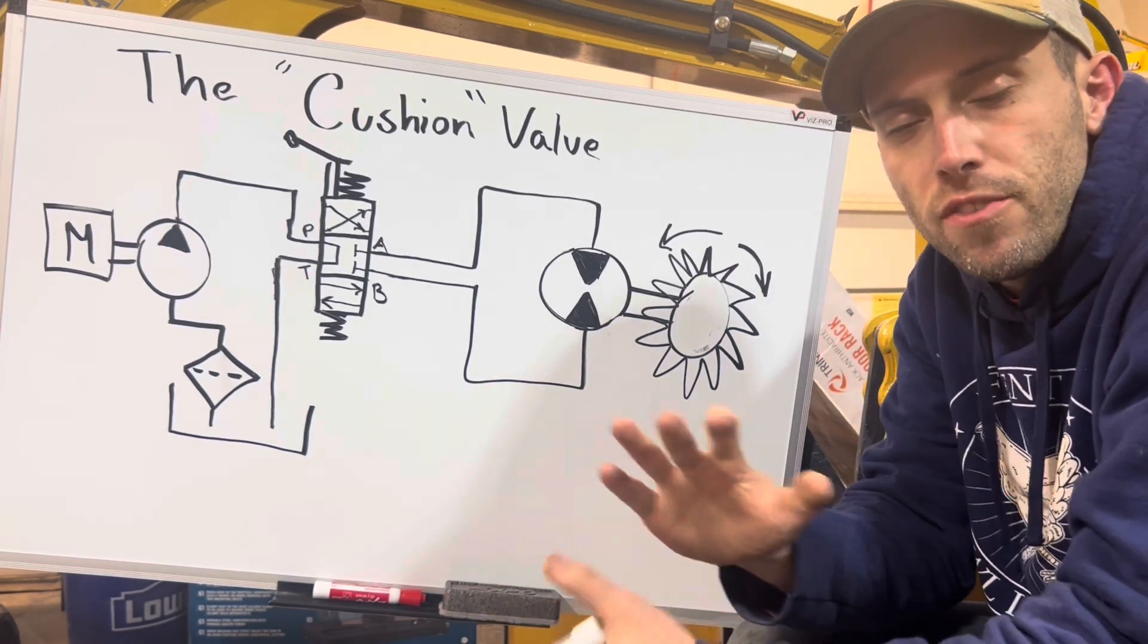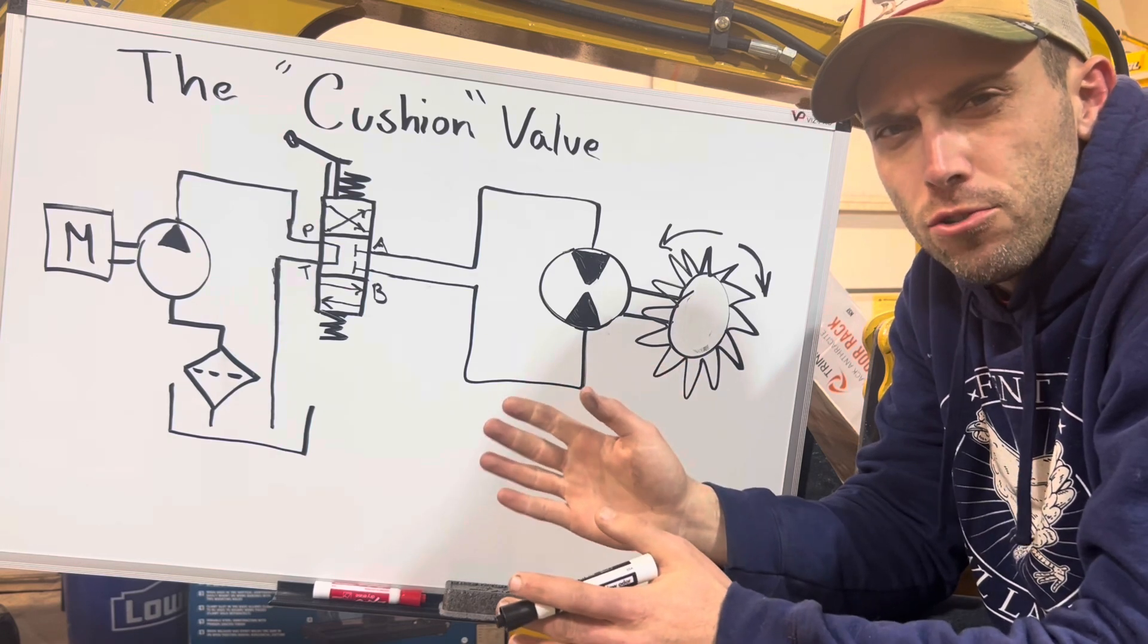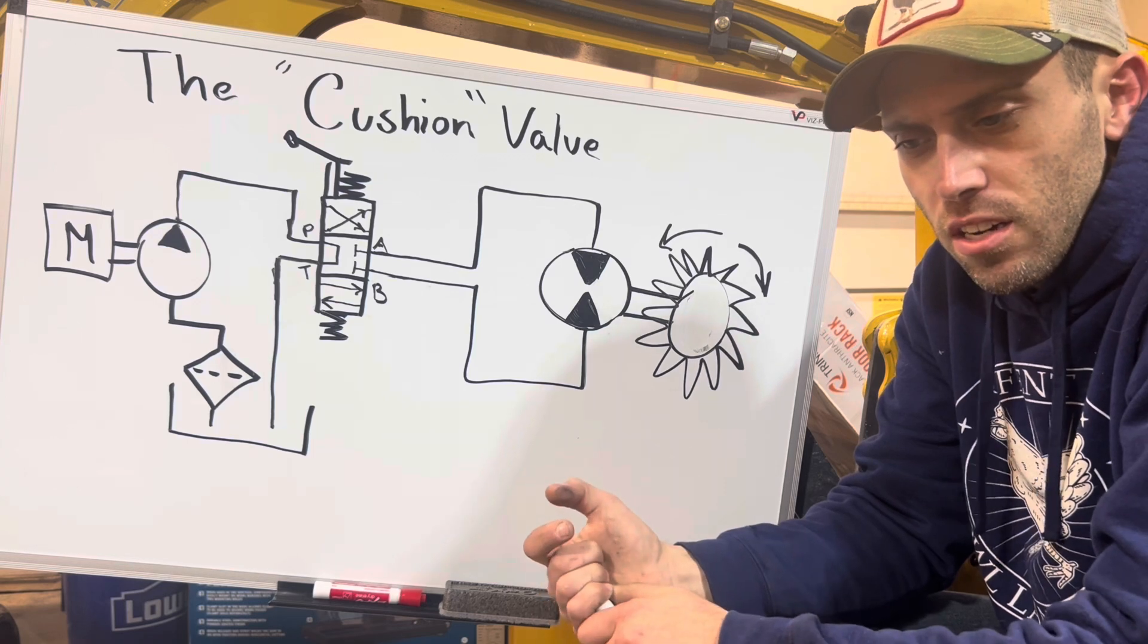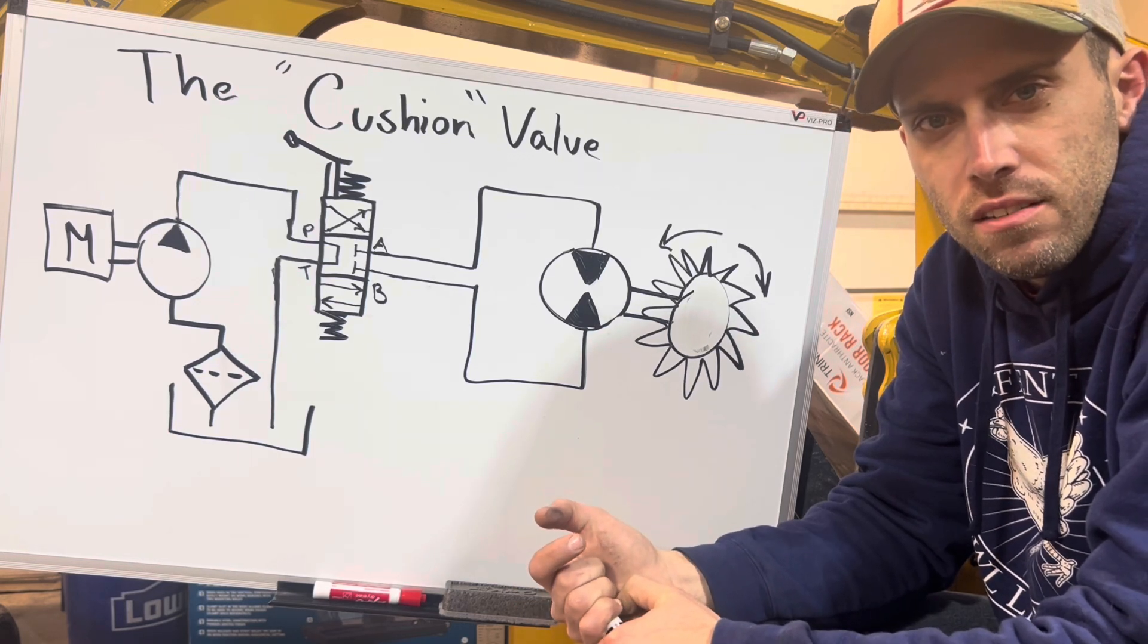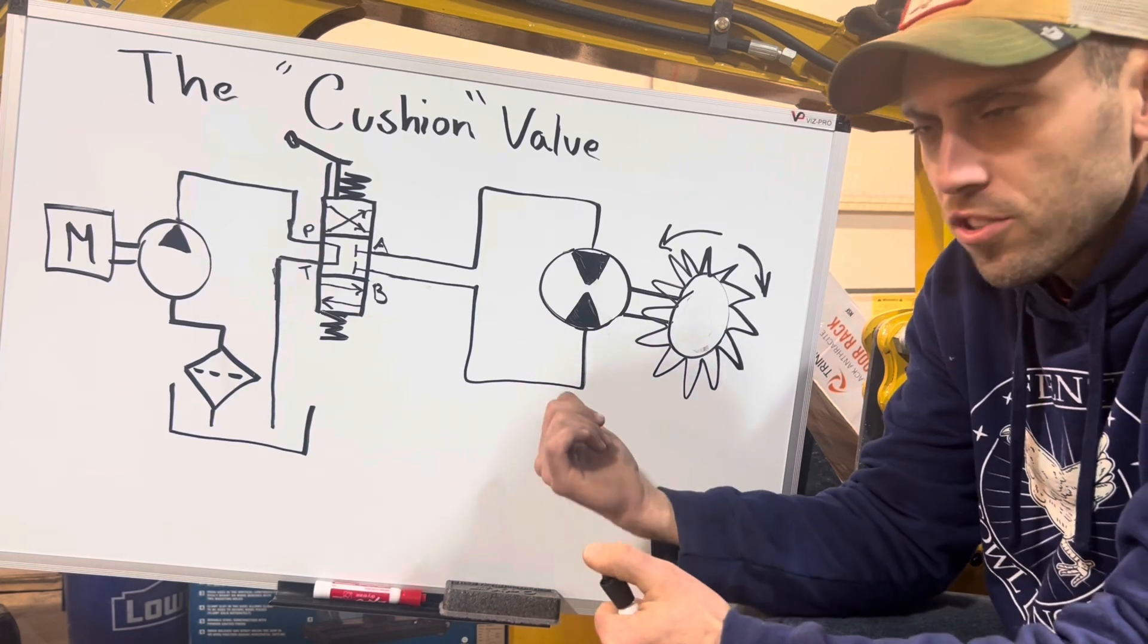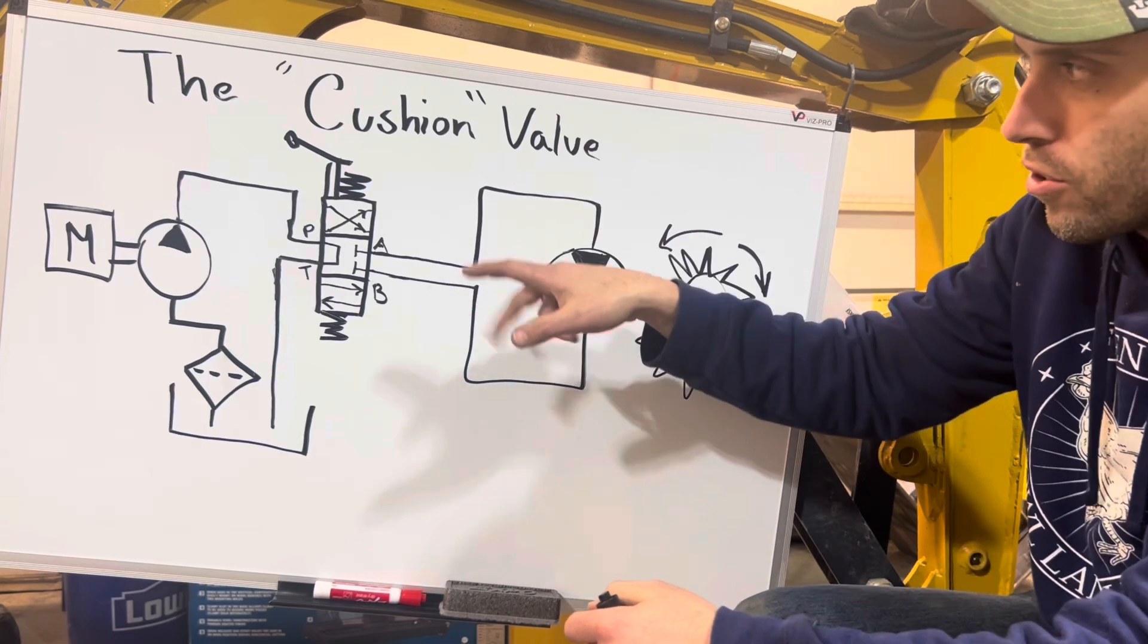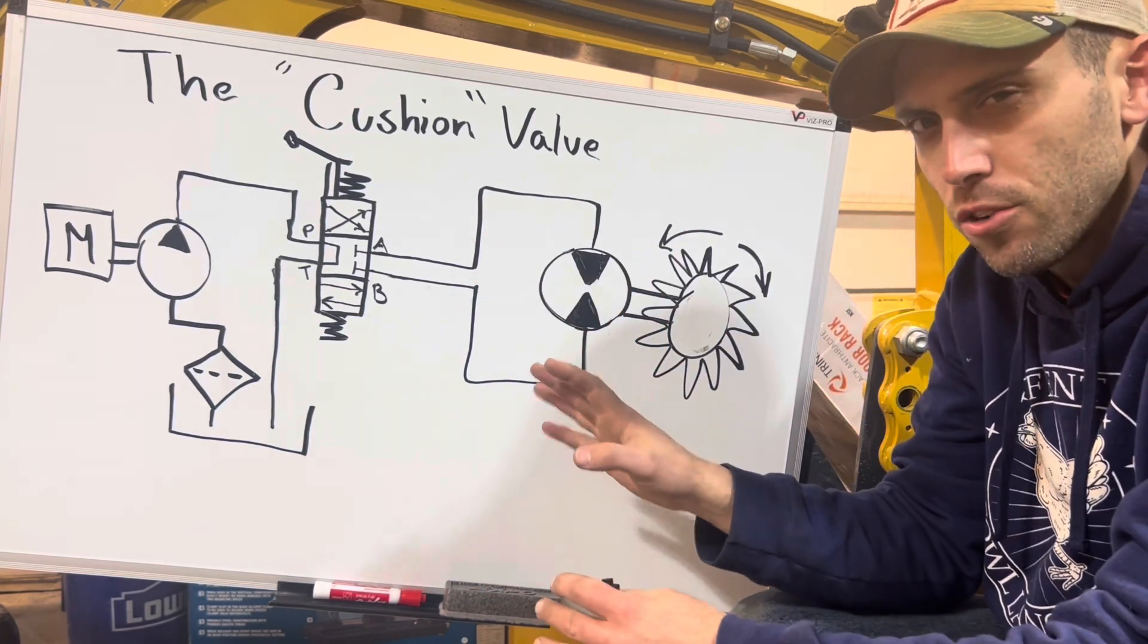So this video is sort of a kind of like a part two to a video that was brought to my attention. A guy on the Facebook groups found some guy in China that added this to their machine, and the guy said it improved it quite a bit. So we're going to go over what's going on in the hydraulic system, and then I'm going to change it out for the addition of a cushion valve and show you how it changes things.